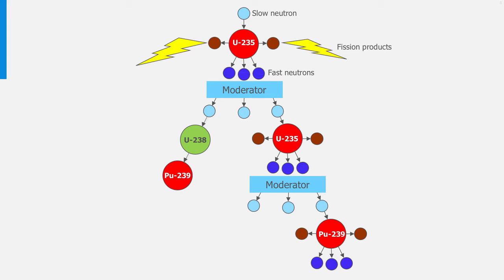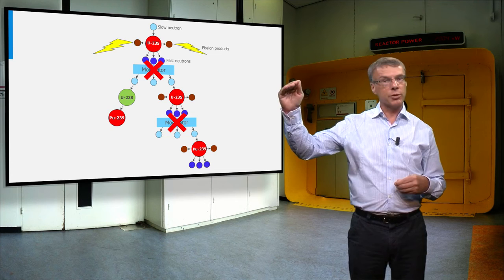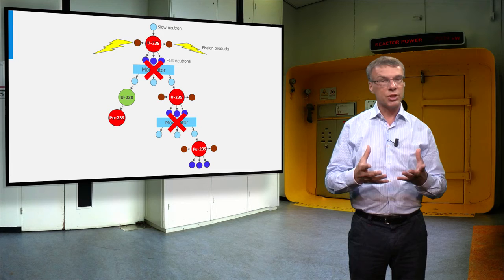In a fast reactor we use no moderator to slow down the neutrons. Of course, the probability to fission uranium-235 becomes much smaller in this case, and we compensate this by increasing the fuel enrichment from 5 to about 15 to 20 percent in a fast reactor. In this way, we can compensate for the lack of moderation and the fission chain reaction is still possible.